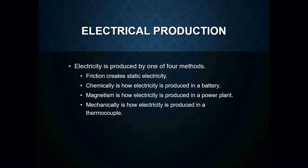Mechanically is how electricity is produced in a thermocouple. Thermocouples are really not found at all in oil heat, but you do find them in standing pilot gas furnaces. Basically, a thermocouple uses the flame from a pilot light to generate its own little millivolt circuit that will keep the pilot valve coil inside a gas valve energized so that the pilot valve will actually stay lit the entire time. This is an example of how we use heat to generate electricity to keep a device energized so that we can continue to light something.